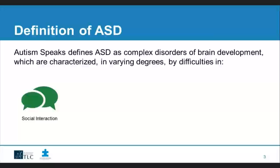Children with ASD have difficulty interpreting what others are thinking and feeling. Subtle social cues — a smile or a grimace — have little meaning for them. A simple statement like 'Come here' may mean the same thing regardless of whether it's said with a smile and arms extended or with a frown and hands on hips. People with ASD lack the understanding that others have different feelings, ideas, and goals. In preschool classrooms, this impacts interactions, play skills, and turn-taking.